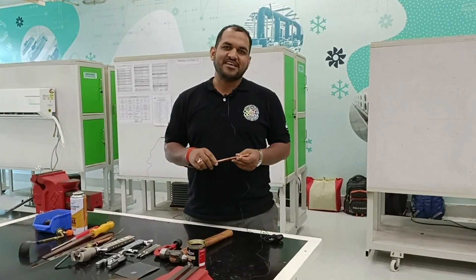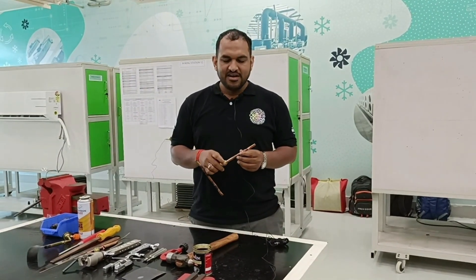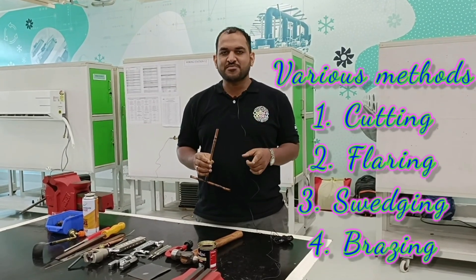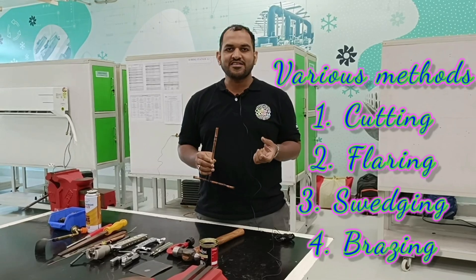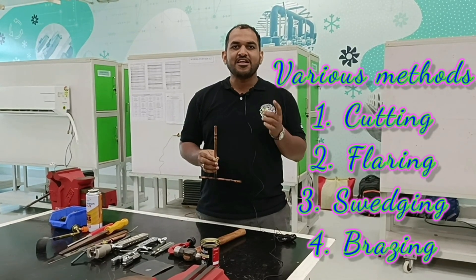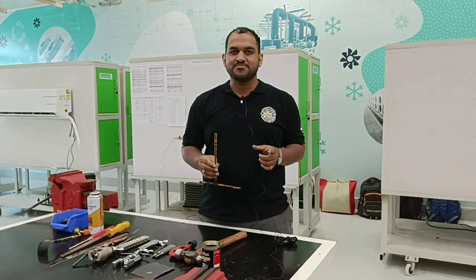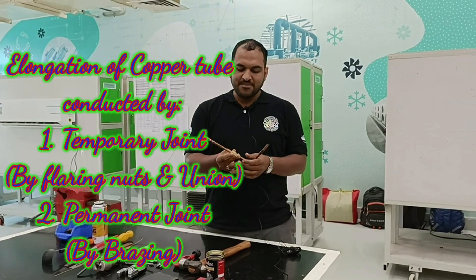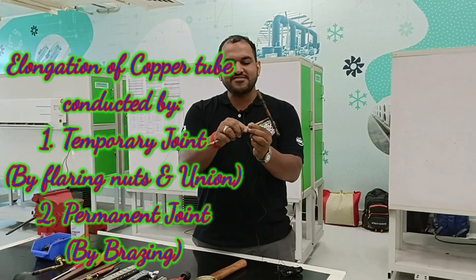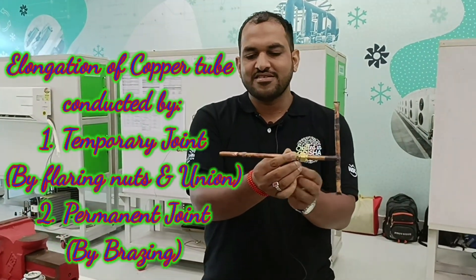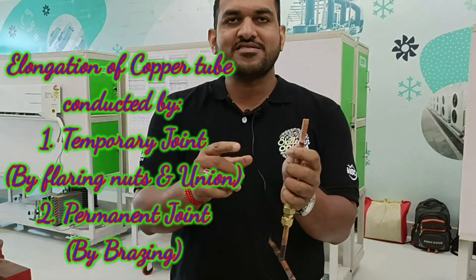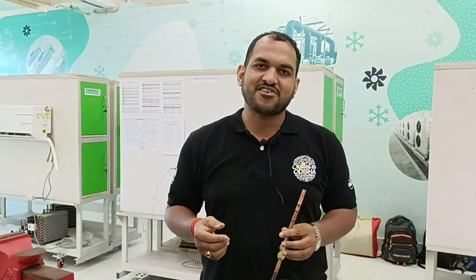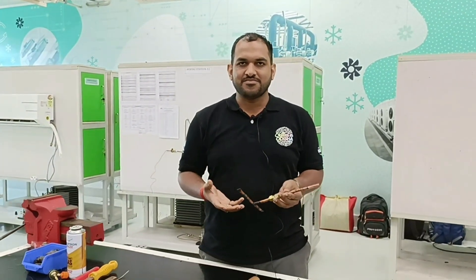Hello everyone and welcome back to my channel. This is V. Mohan Kumar and today we will discuss the various processes associated with air conditioning: tube cutting, flaring, swaging, and brazing. To elongate copper tubes we follow two methods — temporary, using union and flaring, and permanent, using the brazing process. Our students will now demonstrate these basic processes.